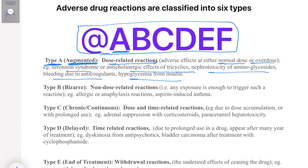Type B reactions are remembered as 'Bizarre.' These are non-dose-related reactions where even a single, very small exposure might be sufficient to cause the reaction. Any exposure can trigger it. Examples include allergies or anaphylaxis to antibiotics or other drugs, and aspirin-induced asthma. These are non-dose-related reactions.